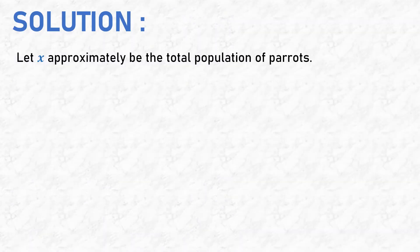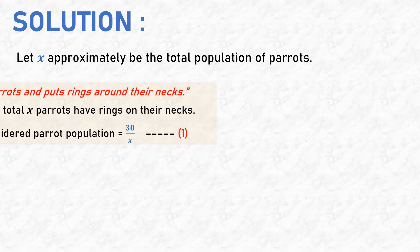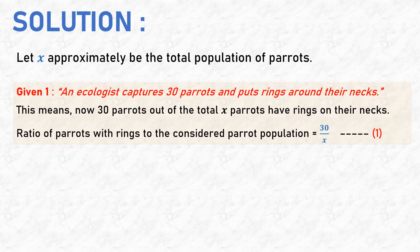Solution: Let X be the approximate total population of parrots. It is given that an ecologist captures 30 parrots and puts rings around their necks. This means that 30 parrots out of the total X parrots have rings. Therefore, the ratio of parrots with rings to the total parrot population equals 30 by X. Let this be Ratio 1.